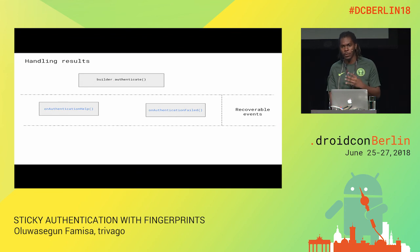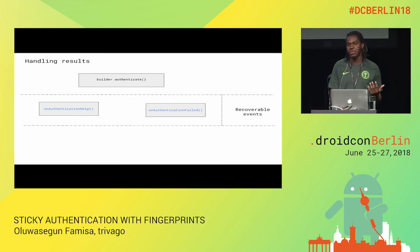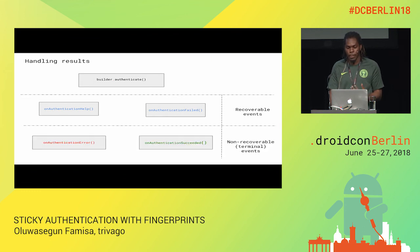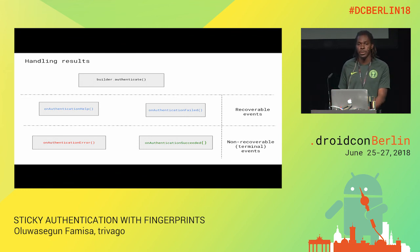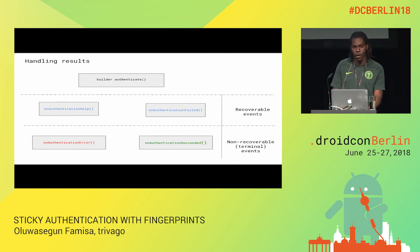The failed callback is when a fingerprint is recognized but doesn't match any of the previously saved fingerprints on the device. Two of those four callbacks are recoverable and two are non-recoverable. The help callback is recoverable — you don't need to start the authentication process all over. But if it's an error, it's a dead end — to recover, you need to start the authentication call again. The good thing about the cipher object is it can be used just once, so there is no intermediary attack that could go wrong. If you end up having a success or an error, you need to start all over again.